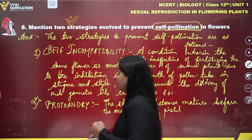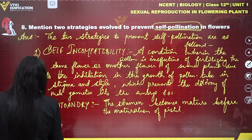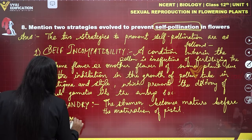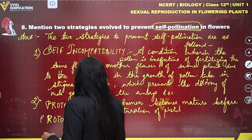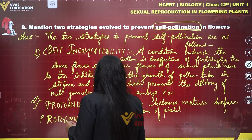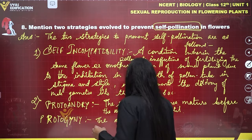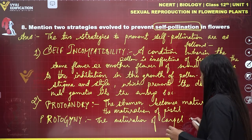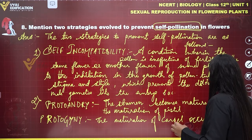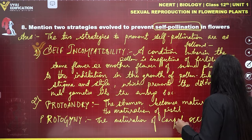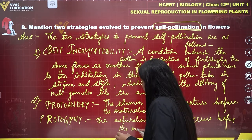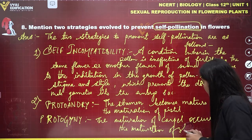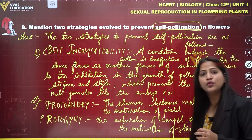We also have another type called protogyny. In protogyny, the maturation of the carpel or pistil occurs before the maturation of the stamen. These are the two strategies which can be helpful in preventing self-pollination in flowers.